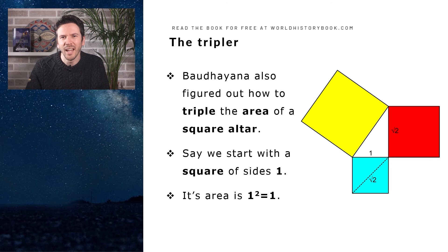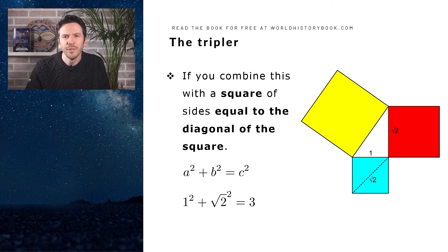Bodhayana then gives us a way to triple the area of a square altar. Let's start with the square at the bottom, the blue square, and let's give it sides 1. Then the diagonal of that square must be equal to the square root of two. If we then make the second square on the right equal to that diagonal, so equal to the square root of two, then the resulting yellow square must be equal to three times the original blue square. Let's now prove that this is the case. Again, a squared plus b squared is c squared. a is equal to 1, 1 squared is 1. b is equal to the square root of 2. The square of the square root of 2 is just 2. So then c squared becomes 1 plus 2 is 3. So indeed, the yellow square has 3 times the area as the original blue square. That is Bodhayana's tripler.